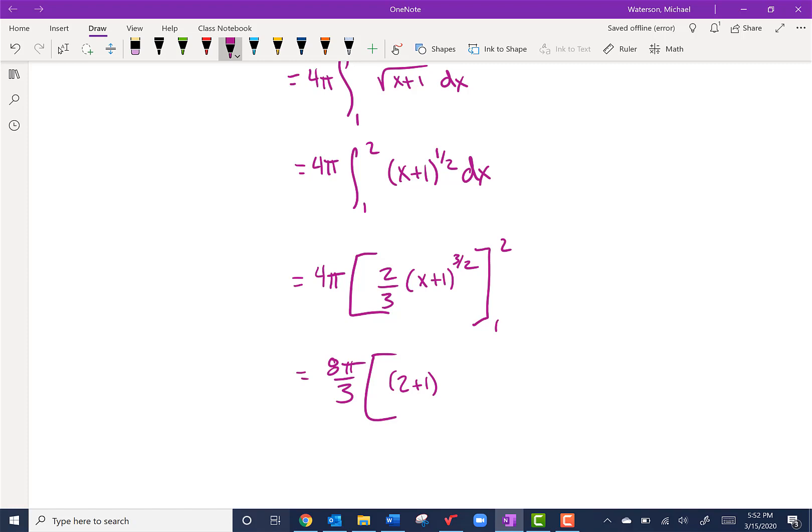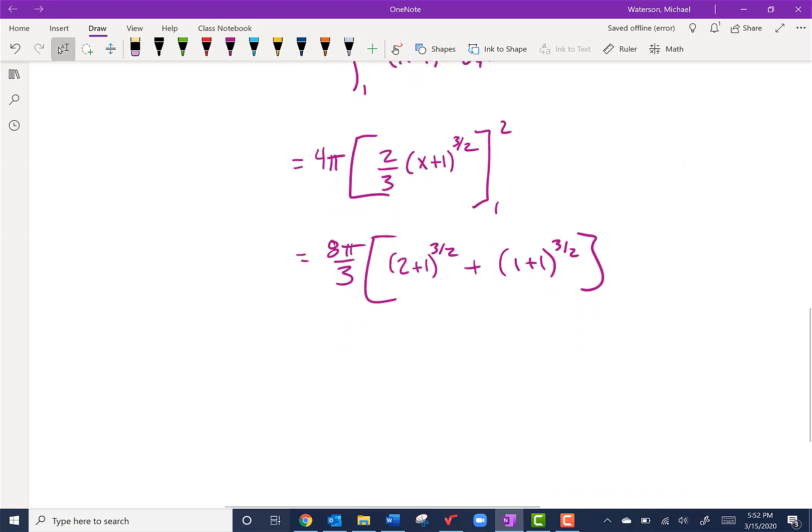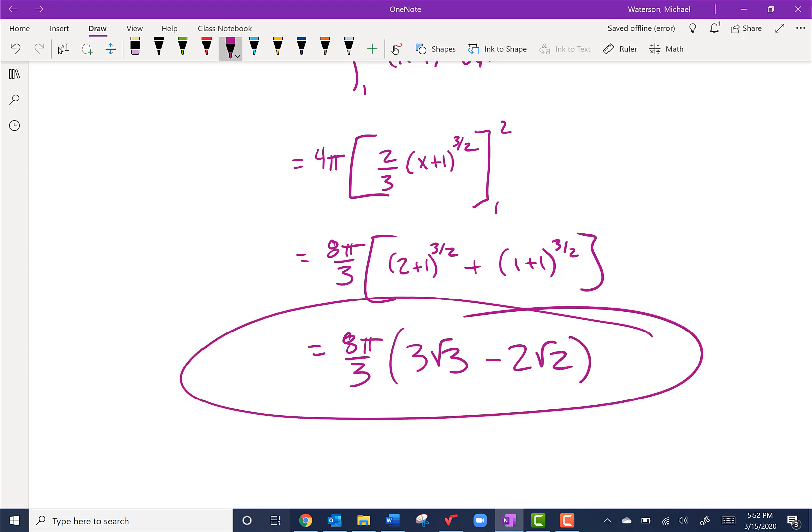Times (2 + 1)^(3/2) minus (1 + 1)^(3/2). And I don't think that's going to clean up much more than that, so let's stop at 8π/3 times (3√3 - 2√2). And I think that might be the solution.